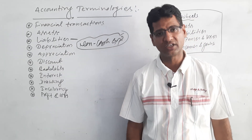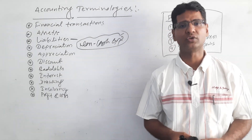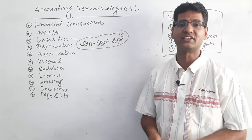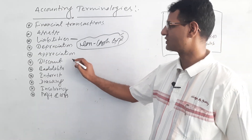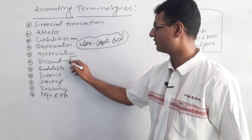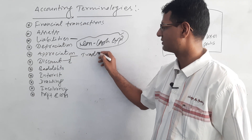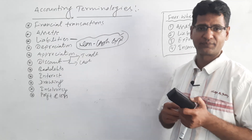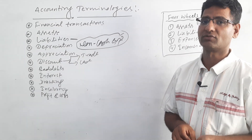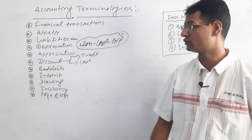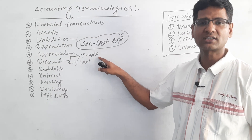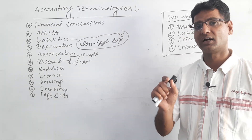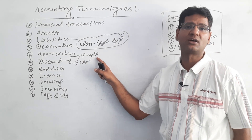The next term is discount. It is a very well-known term used in daily life. Discount is a facility — not compulsory — provided by sellers to buyers. There are two types: trade discount and cash discount. Trade discount is a facility provided by sellers to buyers for purchasing bulk or large quantities. It motivates customers to purchase more goods.